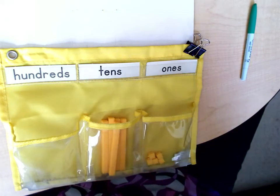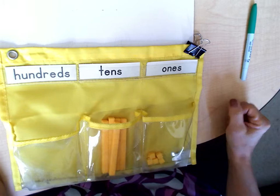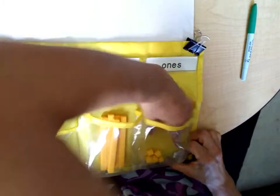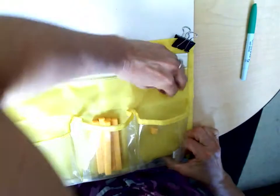So today we're going to talk about place value and we know our place value pocket chart. We've got the ones place here and we've got some cubes in here of singles, right? We have some single ones.